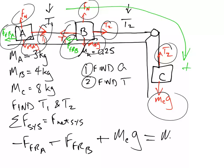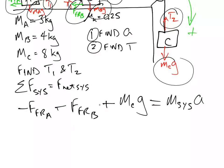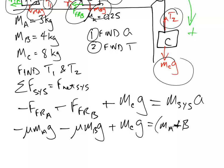Now that's going to equal the mass of the system times acceleration. And if we write this out, we're going to get negative μ mA g minus μ mB g plus mC g is equal to mA plus mB plus mC times a.